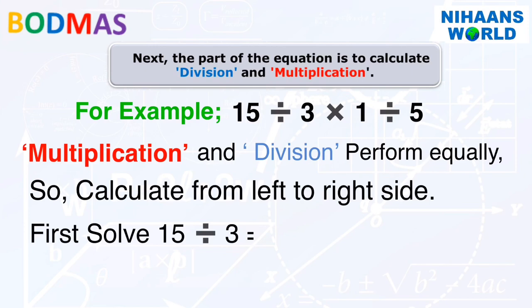Multiplication and division perform equally, so calculate from left side to right side. First, solve 15 divided by 3 is equal to 5. Then, 5 multiplied by 1 is equal to 5. Then, 5 divided by 5 is equal to 1.